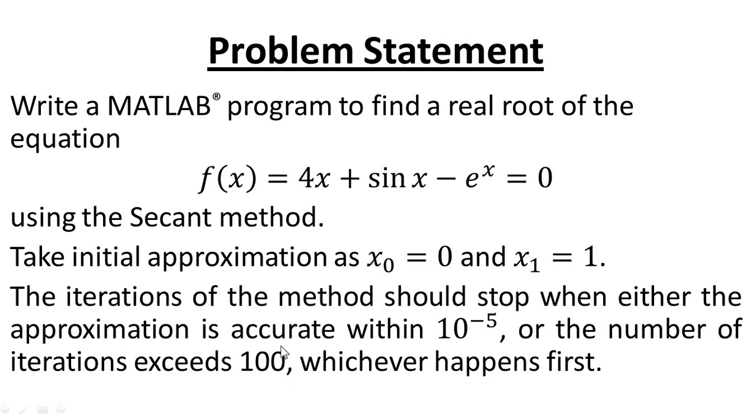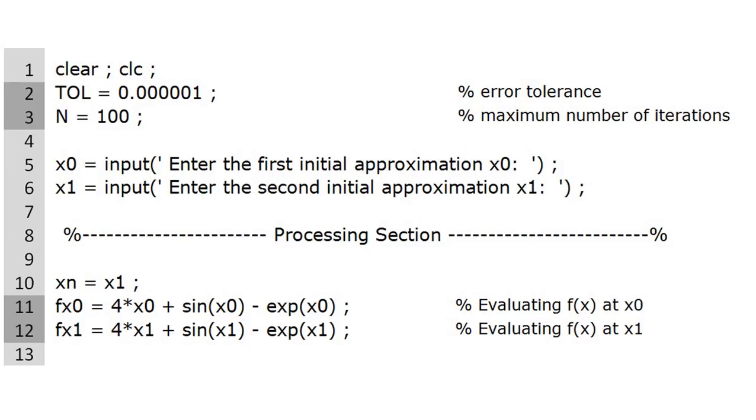This is the MATLAB code or Octave code for the secant method to solve the given problem. The first command is clear to remove all the variables from the memory. Next clc, this will clear the output screen. We set the variable TOL to represent the tolerance of this quantity. N is equal to 100 as the maximum number of iterations. Next we receive two inputs as the two initial guesses x0, x1 using these two commands. Next we move to the processing section.